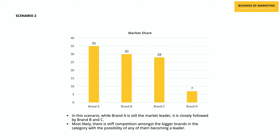Now let's look at the second scenario. In this scenario, there are four different competitors, with brand A at 35%, whereas brand B and C are closely following at 30% and 28%, and brand D is a really small player at 7% market share. In this scenario, while brand A with 35% is still the market leader, it is closely followed by B and C, and it would not be wrong to guess that there is stiff competition going on between the bigger brands in the category.